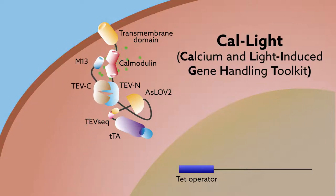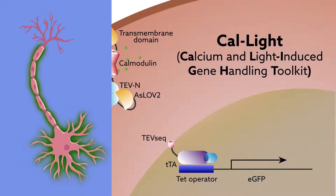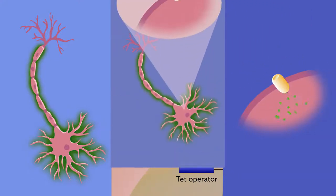works by using flashes of blue light coupled with calcium influx to trigger the production of proteins inside active neurons. These proteins can be fluorescent markers to label neurons, proteins that regulate activity to hijack neurons, or both.